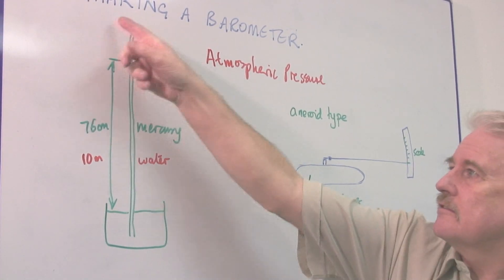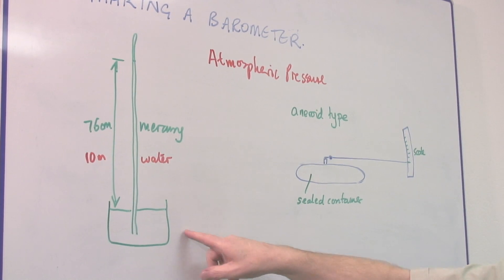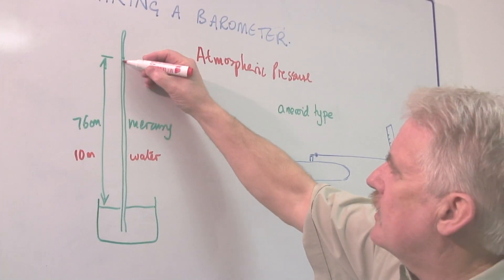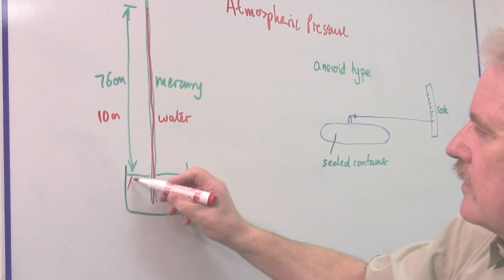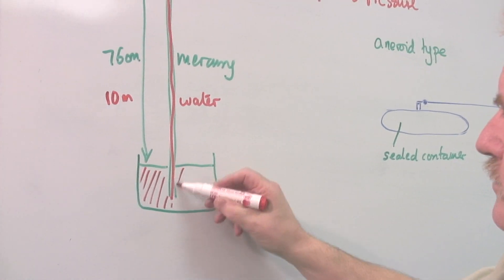The first is this traditional barometer, a mercury barometer. In it is a liquid, and the liquid is usually mercury, and this whole thing contains mercury.